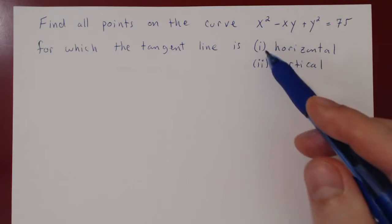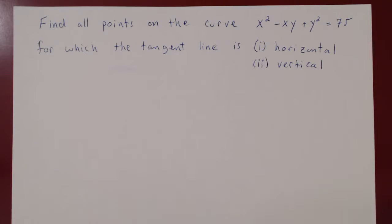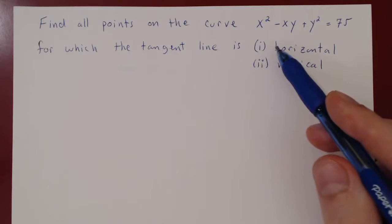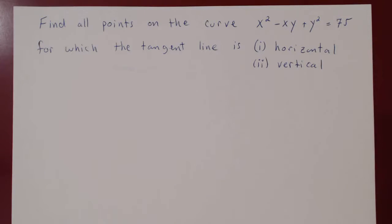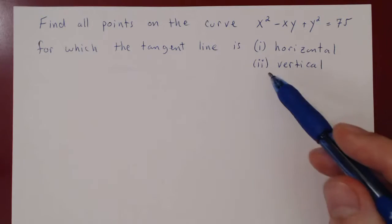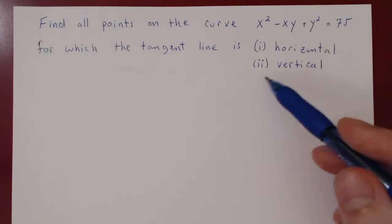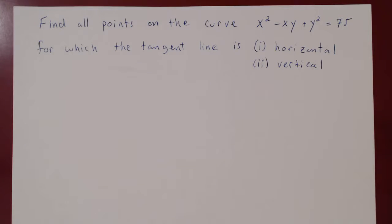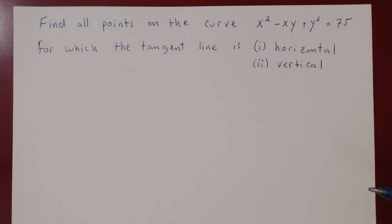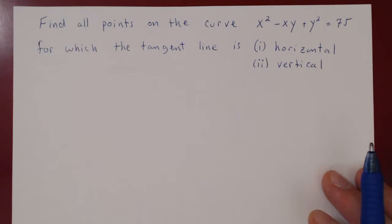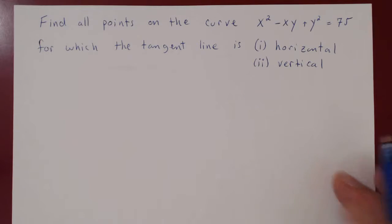A horizontal tangent line has a slope of 0, so we're looking for points where the derivative equals 0. A vertical line has infinite slope, and when we find the derivative it will be a fraction — a division by 0 will give us an infinite slope. So we need to first find the derivative.